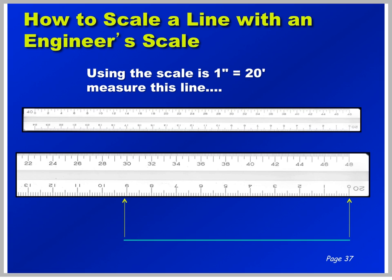Let's do one more example. Using 1 inch equals 20 foot, measure this line. First, find the 20 inch scale. Set it down on the line, making sure you line up with the zero mark. Then simply read off the numbers: 10, 20, 30, 80, 90 — and you're one tick past the 90, so 90 plus 1 equals 91 feet. Engineer scales are really easy — remember, add the zero to each number, and then read the tick mark between the numbers.